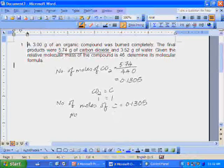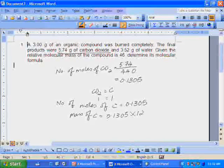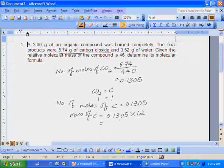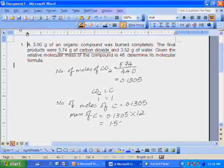And therefore the mass of carbon is 0.1305 times the atomic mass which is 12. And we will get a value of 1.565.